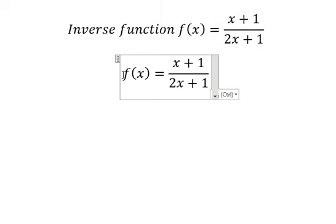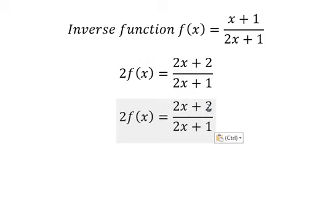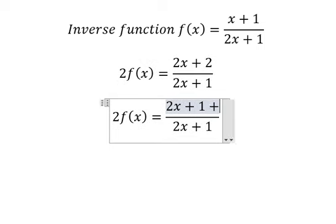The first thing we need to do is multiply by 2 on both sides because I want to create this form: divide by 2x plus 1. That gives us 1 plus 1.